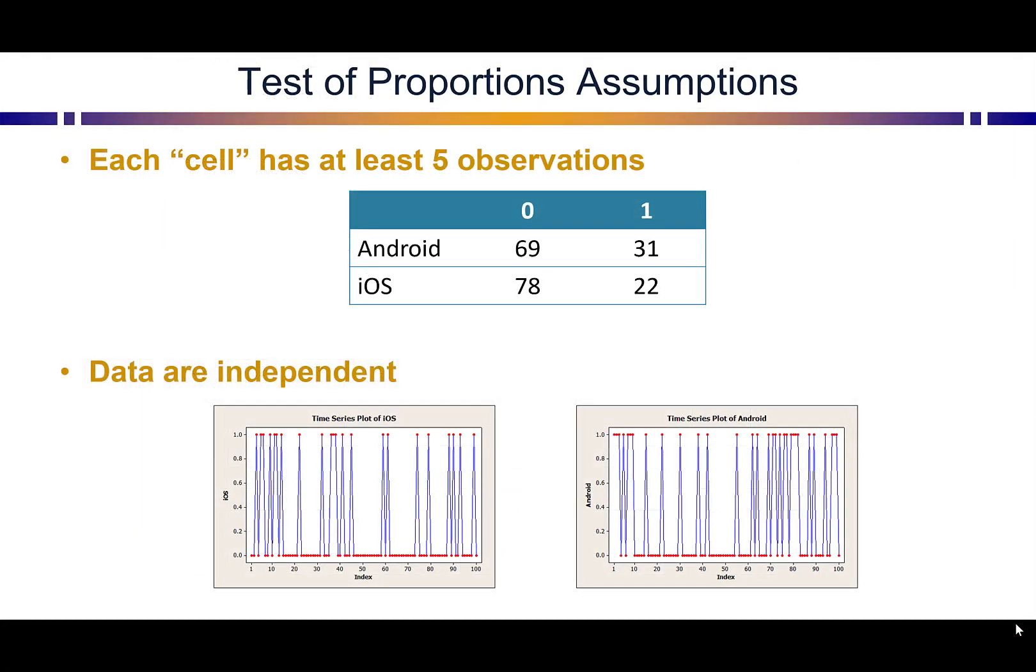Now, after running these two tests, with any single-factor hypothesis test, you need to make sure the assumptions are being met. The key one with test of proportions is that you have at least five or more observations in each of either not doing something or doing something. So in our summarized table here, we need to see five or more in each of these. And we do in this case, so we're good.